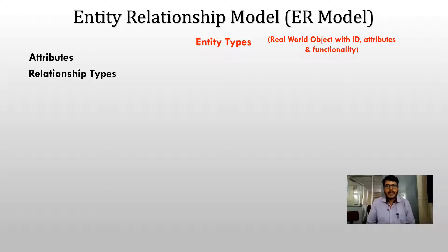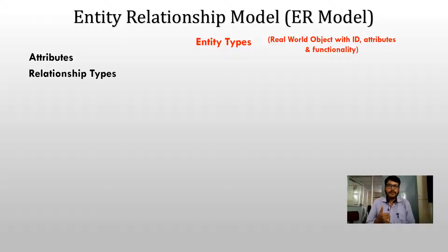Each entity type has its own attributes. What do we mean by attributes? Attributes are nothing but properties — properties belonging to one particular entity. If we consider the example of a student, the attributes belonging to a student are: roll number, university seat number, name of the student, which class they study in, which division, percentage, marks. These are the different attributes or properties belonging to the student entity.